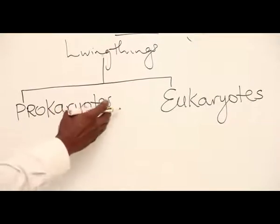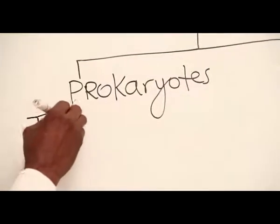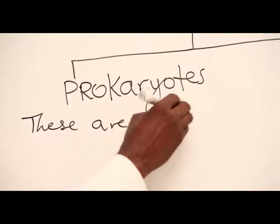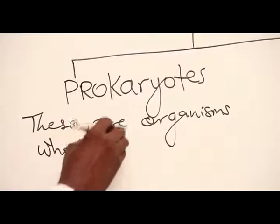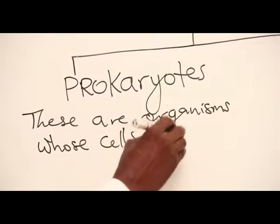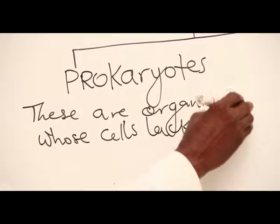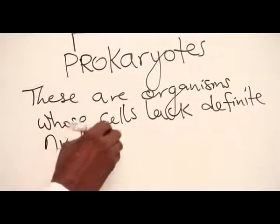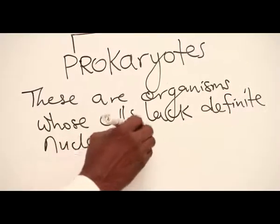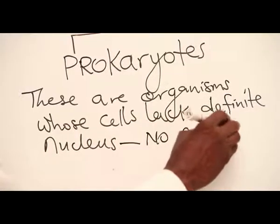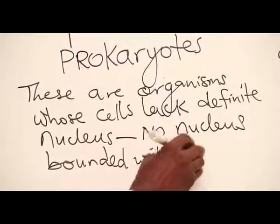Which organisms are here under the prokaryotes? These are organisms whose cells lack the definite nucleus. In other words, they have no nucleus bound with a nuclear membrane.